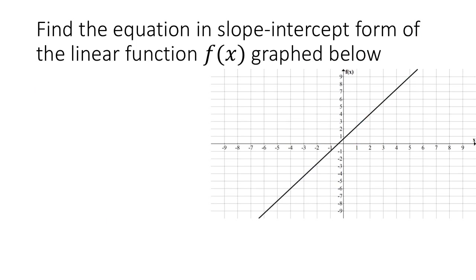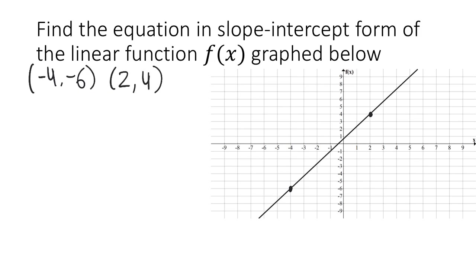This example asks us to find the equation in slope-intercept form from the graph of a linear function. The first thing to point out is that the y-intercept is not an integer — it's somewhere between 0 and 1, so we can't just eyeball it. That means we're going to have to use the point-slope form to come up with an equation for the line, and then clean that up into slope-intercept form. We need to find two nice points on the line: one at negative 4 comma negative 6, and another at 2 comma 4.